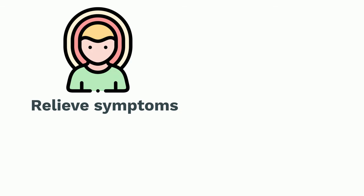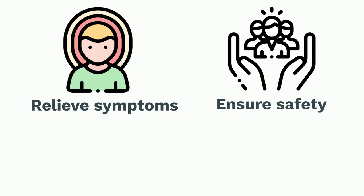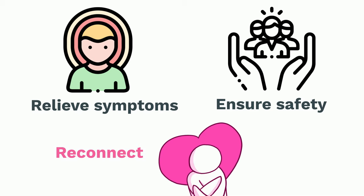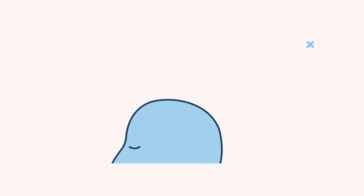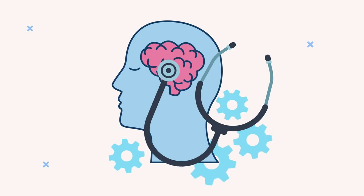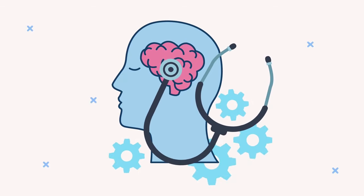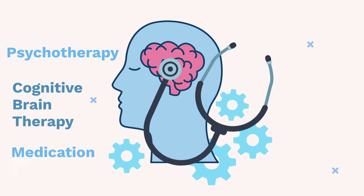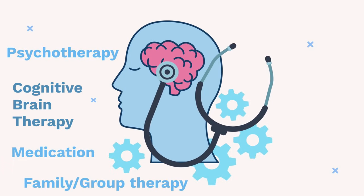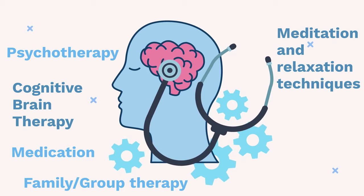The goals of treatment for DID are to relieve symptoms, ensure the safety of the individual and those around them, and more importantly, to reconnect the different personalities into one integrated, well-functioning identity. However, the best treatment approach will depend on the individual. Although there are multiple treatment methods, the most common include a combination of psychotherapy, cognitive behavioral therapy, medication, family or group therapy, meditation and relaxation techniques, and creative therapies.